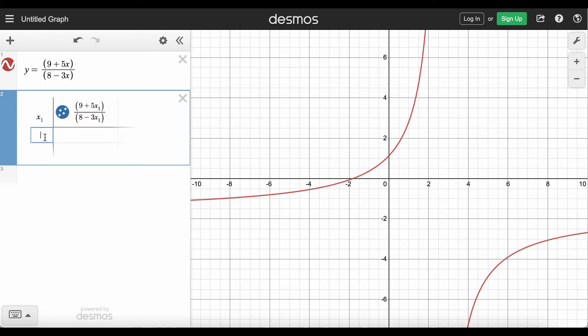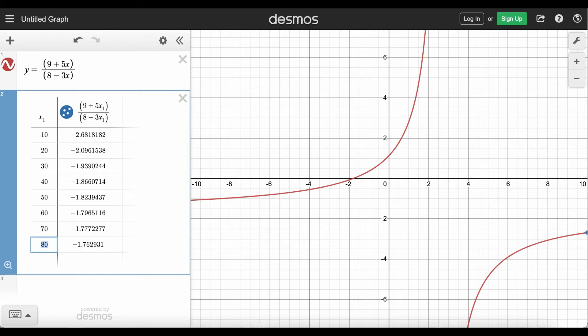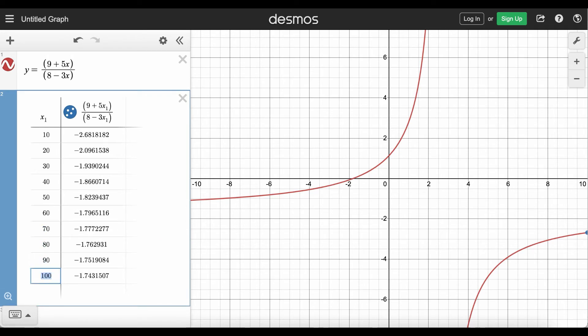So this time I want to start at 10 and I want to increase by increments of 10. So if I add 10 I get to 20, add 10 again I get to 30. Now that I've done this three times I can start hitting enter and Desmos will just follow the pattern for the input values.